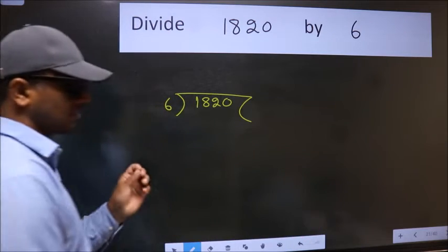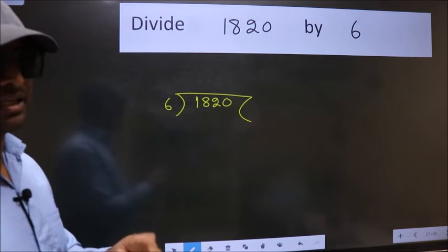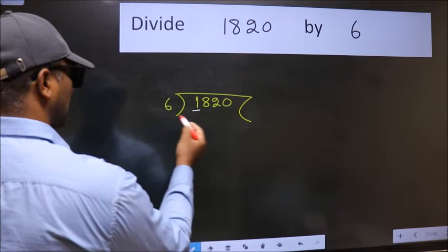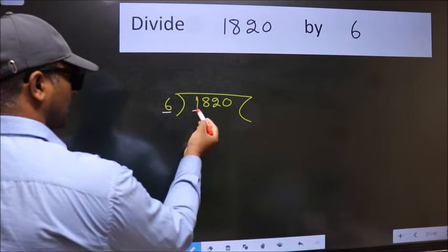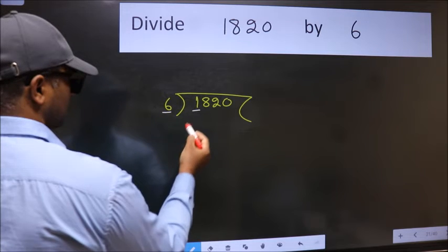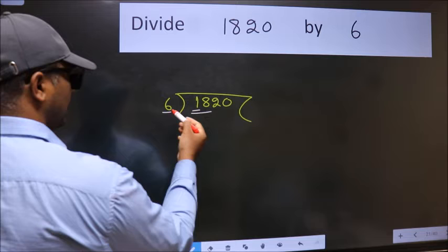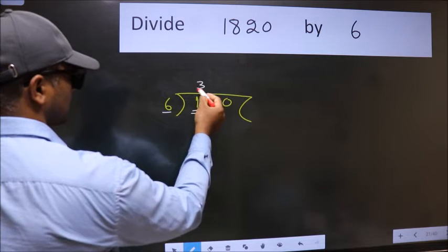This is your step 1. Next, here we have 1 and here 6. 1 is smaller than 6. So, we should take two numbers, 18. When do we get 18 in the 6 table? 6 times 3 is 18.